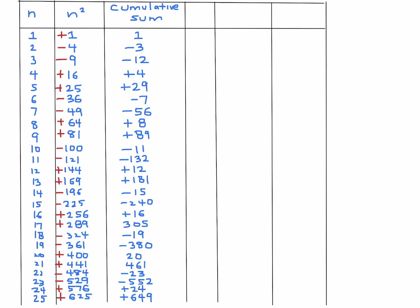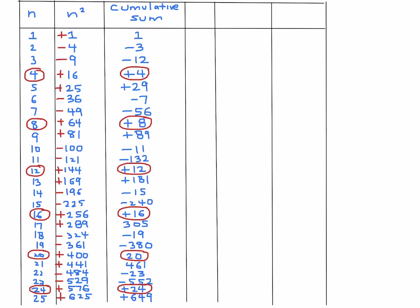Looking at the cumulative sums, they seem sporadic at first, but a pattern emerges. At every 4th term — n = 4, 8, 12, 16, 20, 24 — the cumulative sum equals exactly n. That is, when n is divisible by 4, the cumulative sum equals n. This matches perfectly and puts us in a great position to extrapolate all the way to the end.